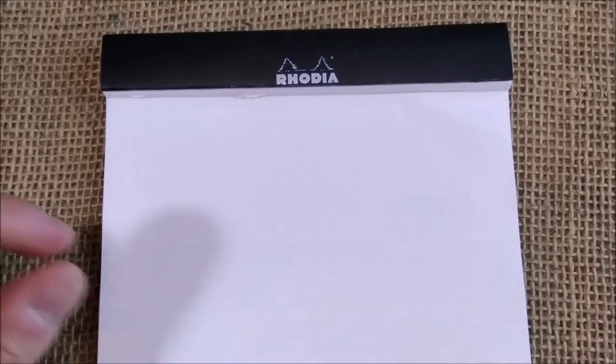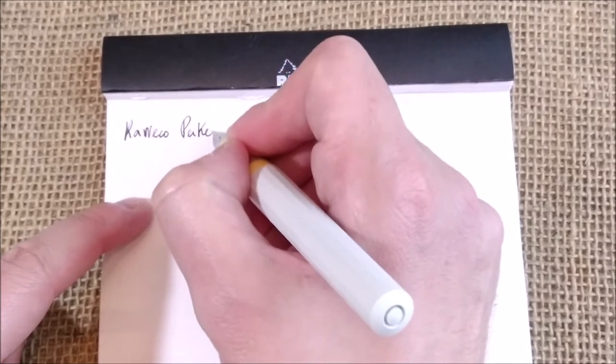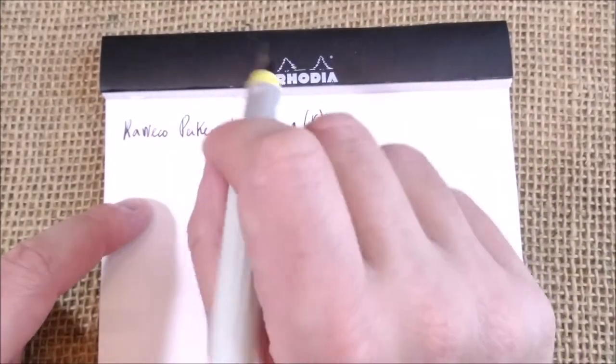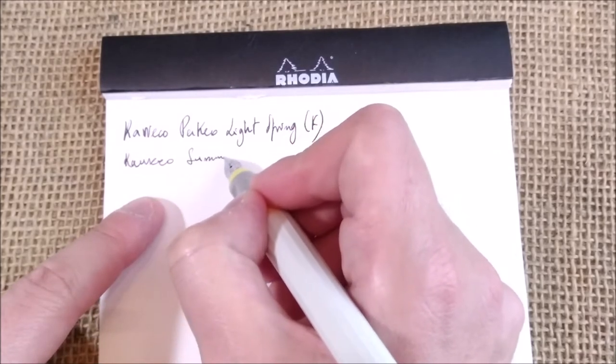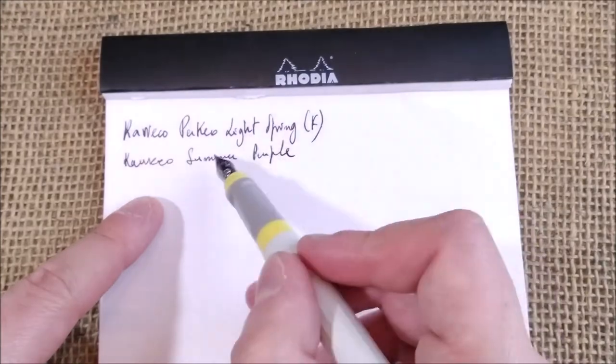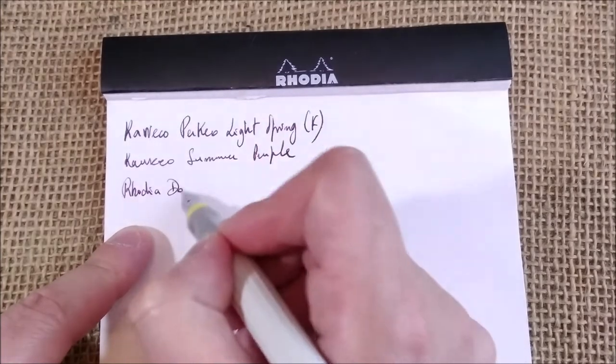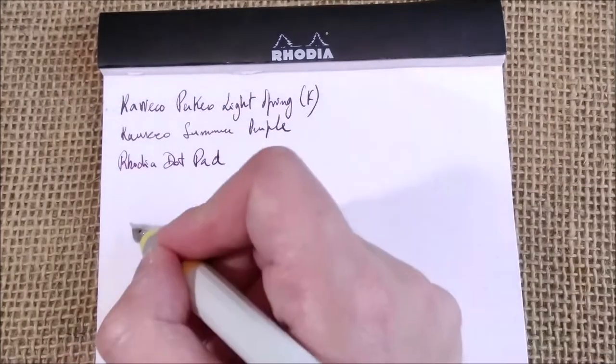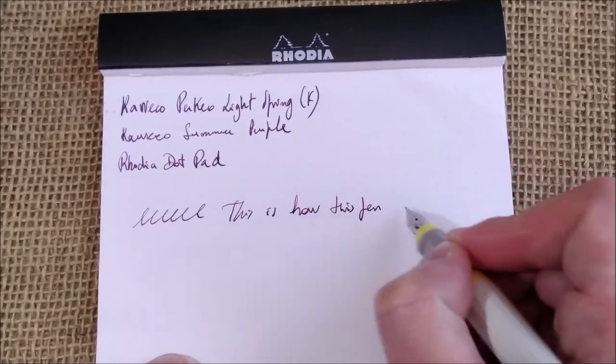Now let's see how the pen behaves on paper. Here we have our Rhodia pad. This is the Kaweco Perkeo Light Spring with a fine steel nib, and I really like this nib. It's quite smooth. The ink is the Kaweco Summer Purple. Which is interesting. Summer, Spring. Now we need more seasons. And then the paper is the usual Rhodia dot pad, which is kind of a good standard paper that you can get easily almost anywhere.